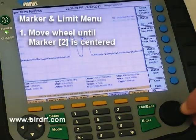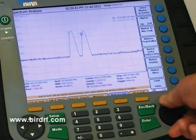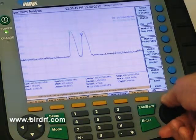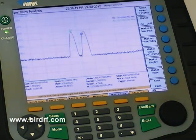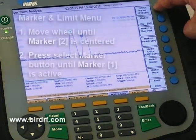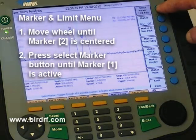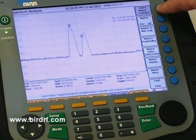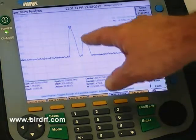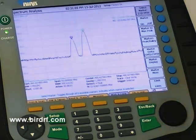If I go back to my Mark and Limit menu, now number 2 marker is green and active so I can move my wheel and get right to the center. And by pressing the Select Marker button until I have Marker 1 active now, I can move in.